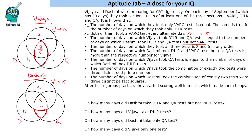The number of days on which Dashmi took DILR and VARC but not QA is more than the respective number for Vijaya. So Dashmi's DILR-and-VARC-not-QA region value is greater than Vijaya's corresponding region.